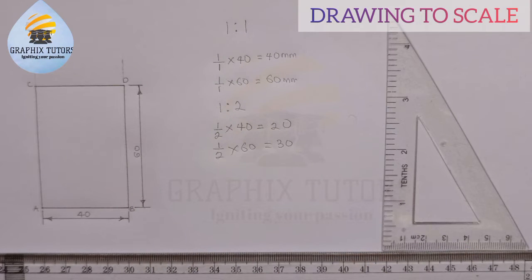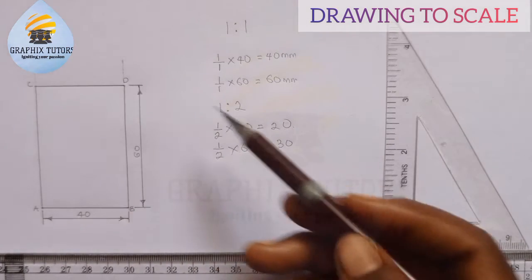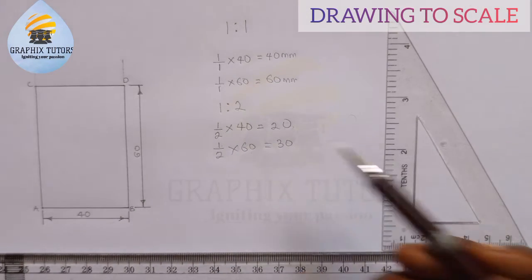So when you hear the word half full size, they're telling you to draw in the ratio of one is to two. If you recognize, I have 40, half full size of 40 is 20. I have 60, half full size of 60 is 30.